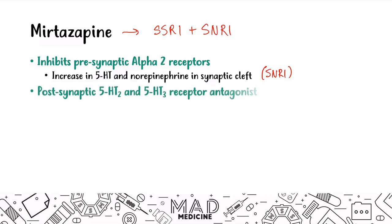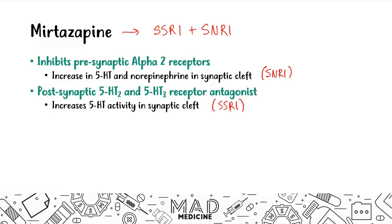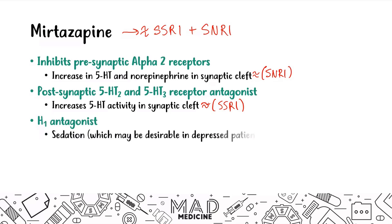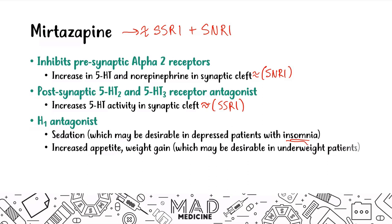Mirtazapine antagonizes postsynaptic 5-HT2 and 5-HT3 receptors, increasing serotonin activity, which is similar to an SSRI — though it affects receptors directly rather than inhibiting reuptake. It also antagonizes H1 histamine receptors, acting like a histamine blocker, which leads to sedation — desirable in patients with insomnia. It also leads to increased appetite and weight gain, which is beneficial for patients who are underweight or suffering from anorexia and depression simultaneously. It can also cause dry mouth.